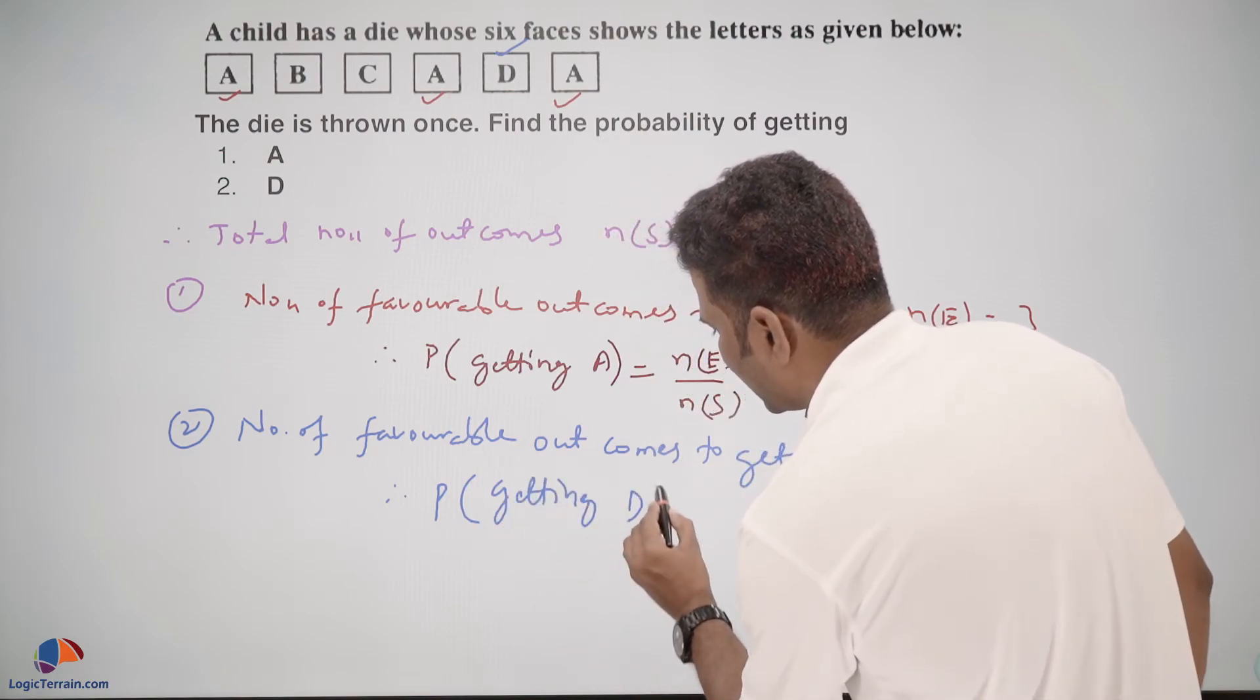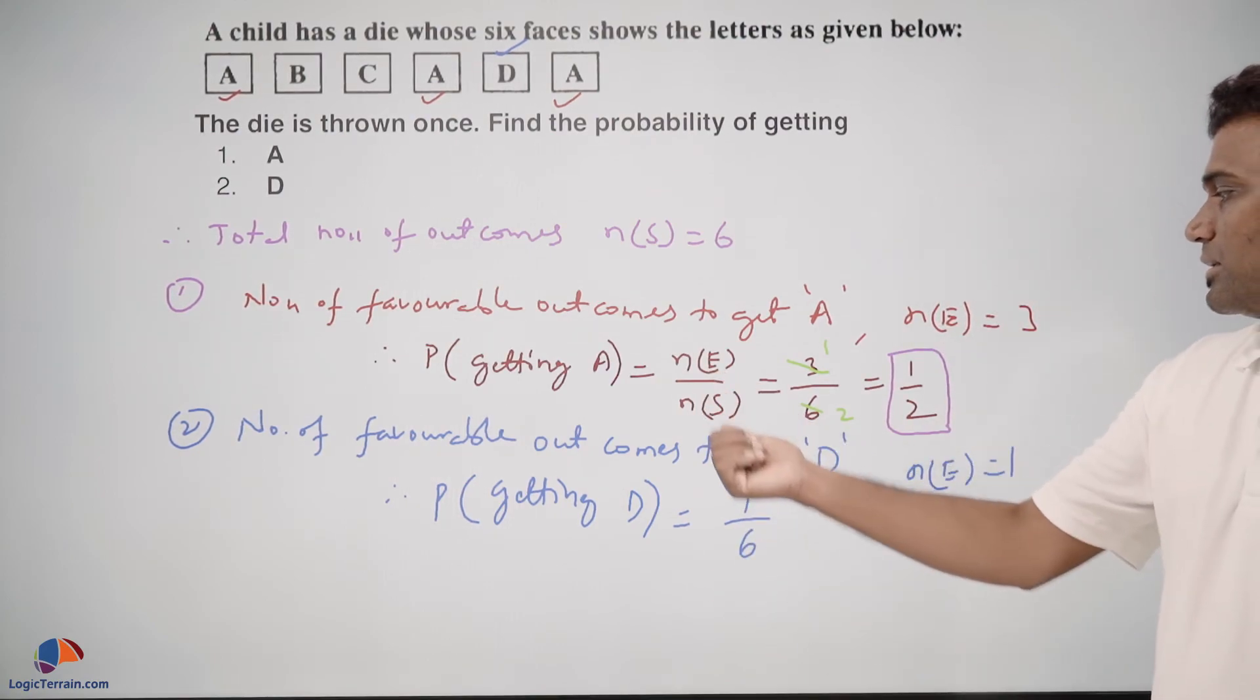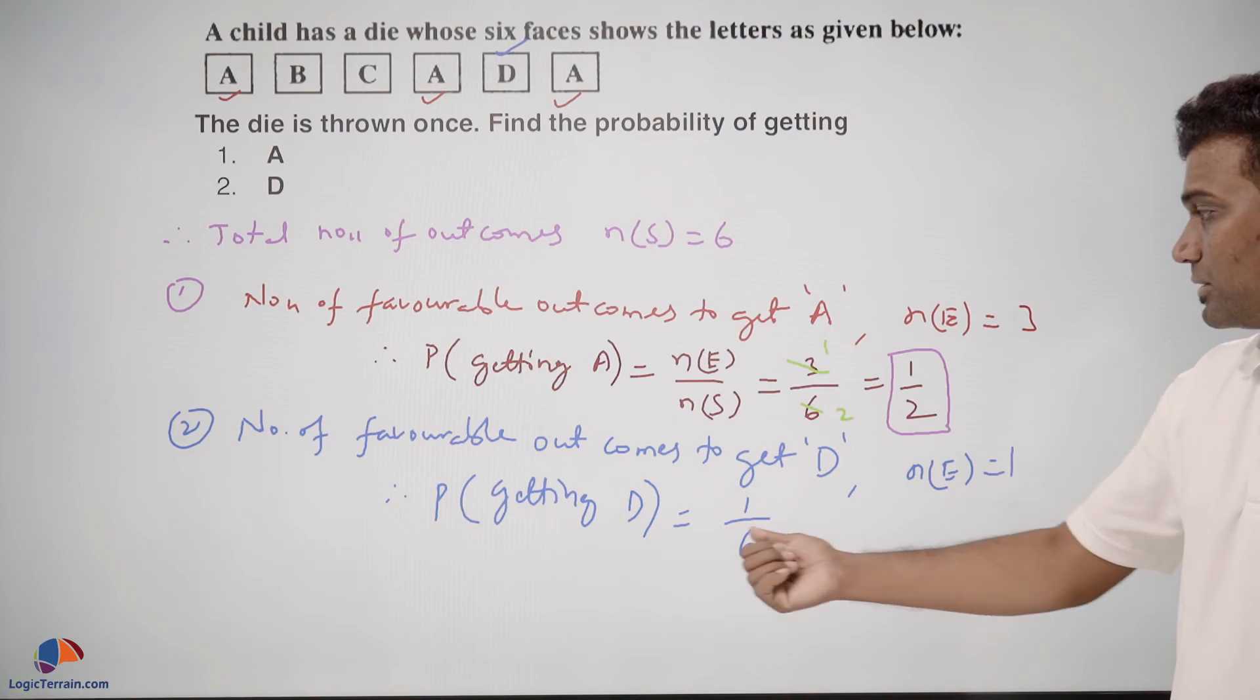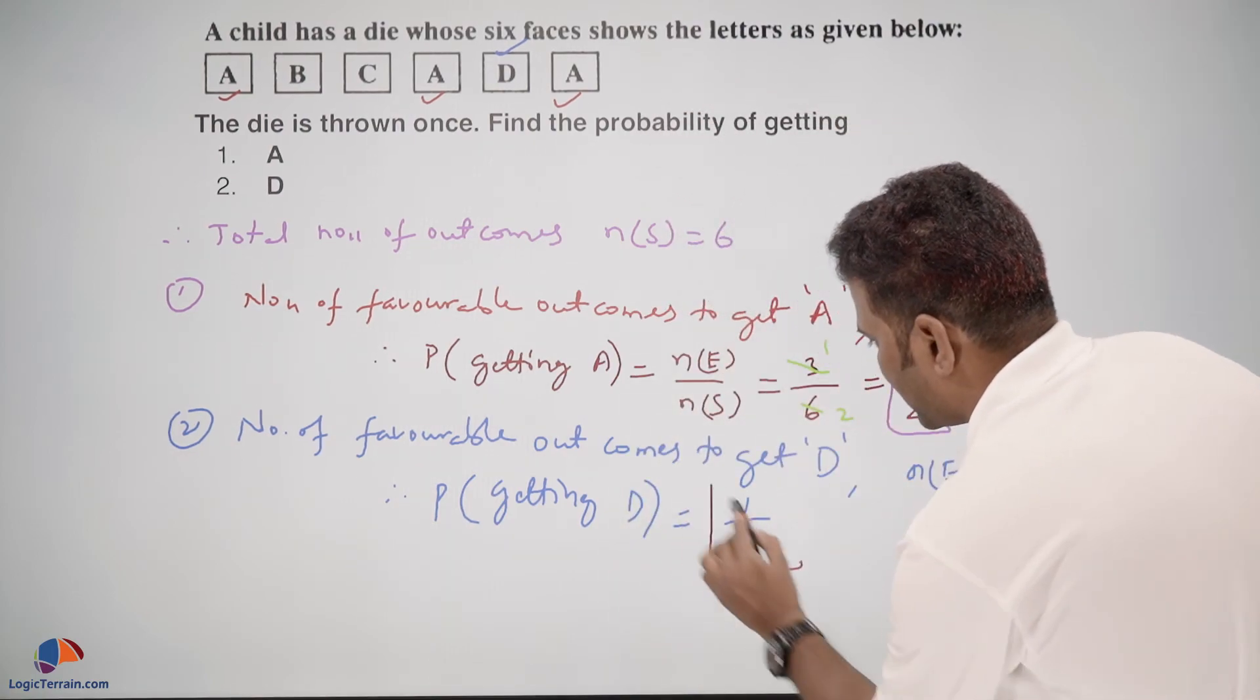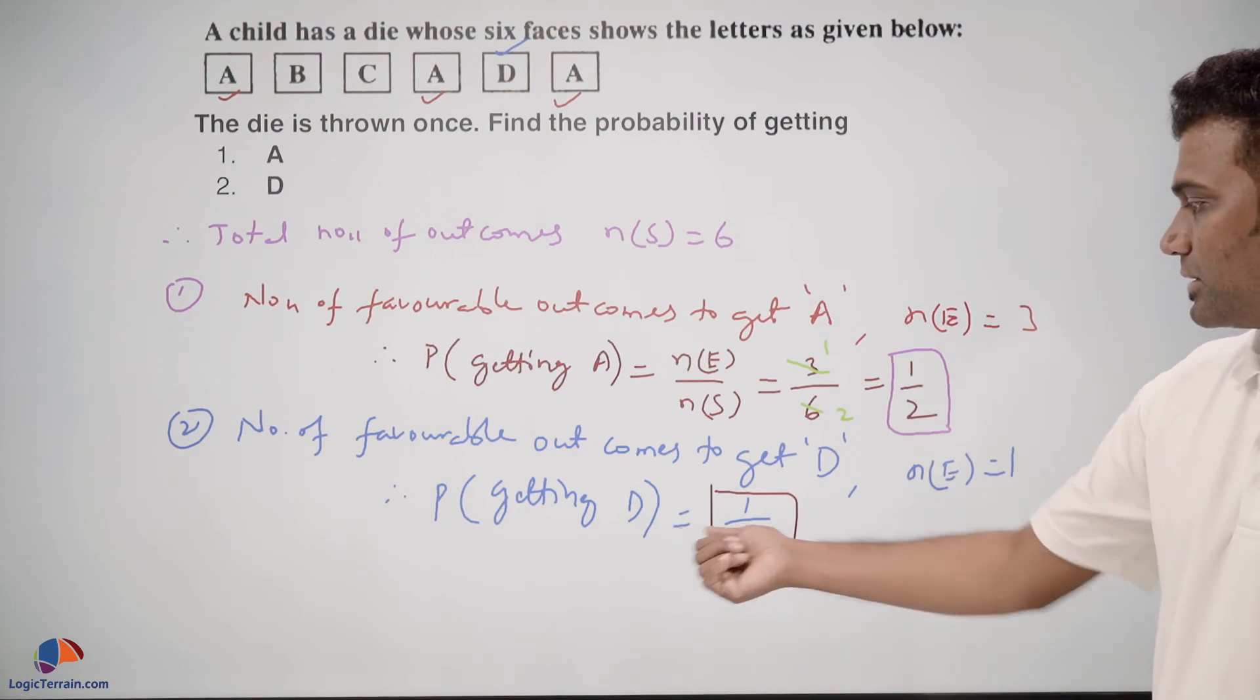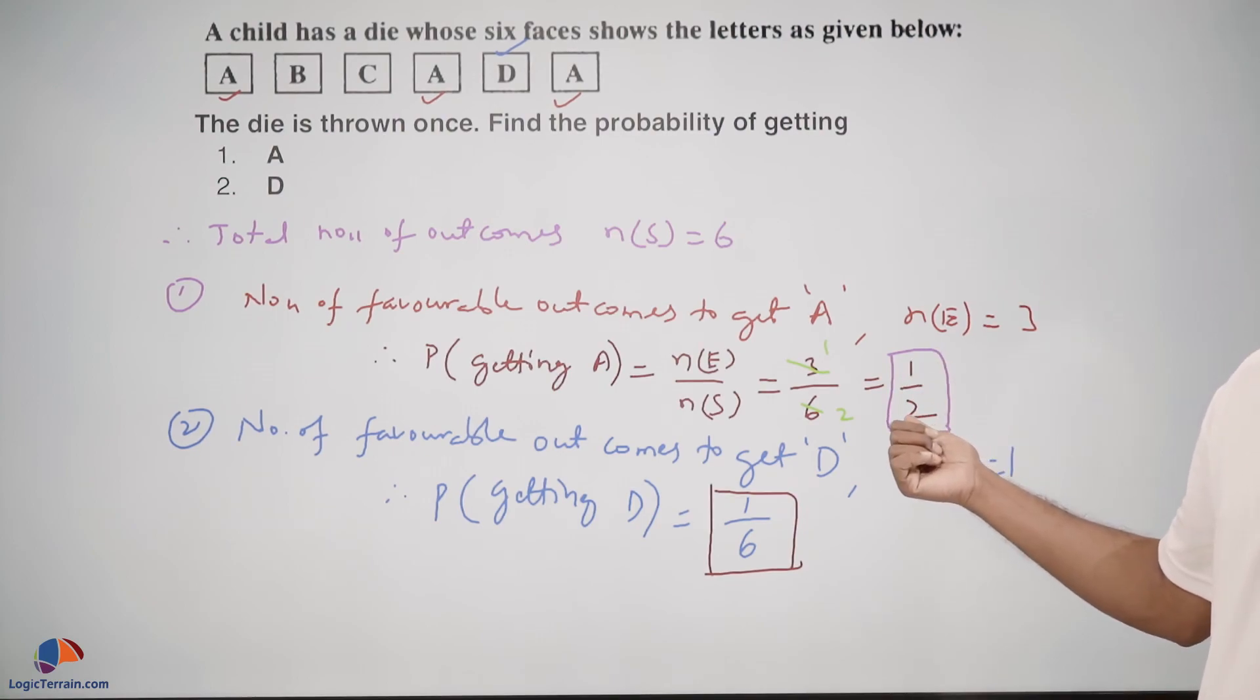equals 1 upon 6, that is number of favorable outcomes upon total number of outcomes, 1 upon 6. So the required probability to get D is 1/6, and the required probability to get A is 1/2.